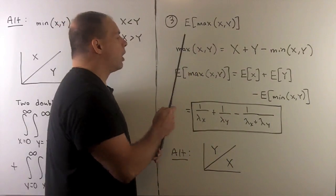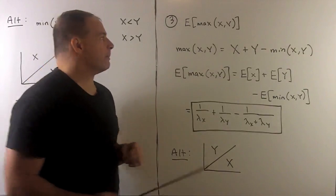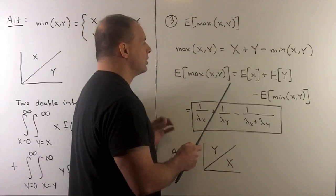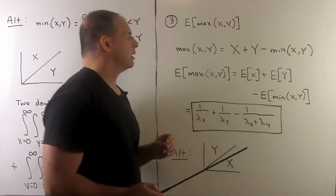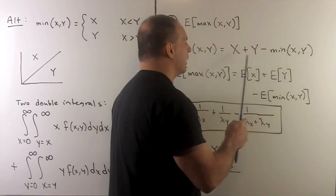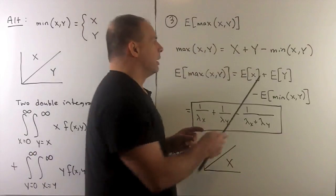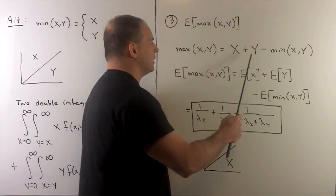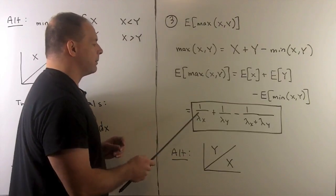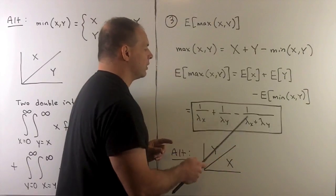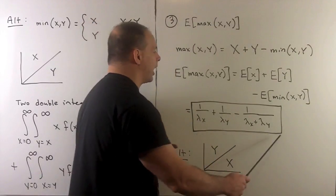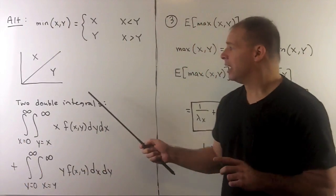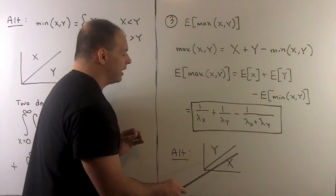For the last part, we want the expected time to the second failure, which is the expected value of max(x, y). The clever approach uses the identity: max(x,y) equals x plus y minus min(x,y). If x is greater, the minimum is y and the y's cancel; if y is greater, the minimum is x and the x's cancel. Taking expected values of each term gives 1 over lambda x plus 1 over lambda y minus 1 over (lambda x plus lambda y), which is our answer. For an alternative method, we use the same double-integral approach with the regions for x and y swapped.